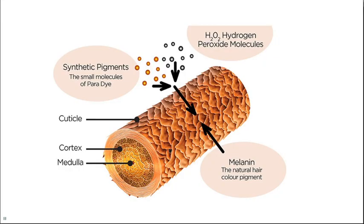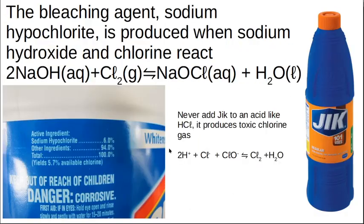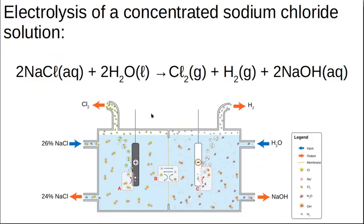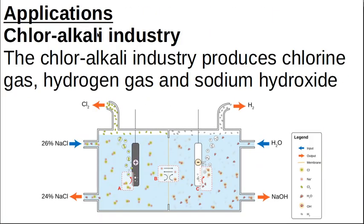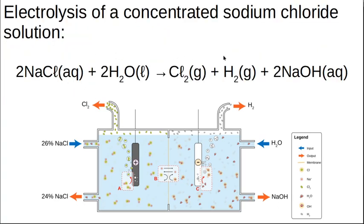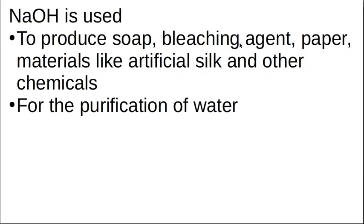So we use, to recap, if you're still with me. We use the chloralkali industry. The chloralkali industry makes chlorine, hydrogen and sodium hydroxide. And we use it for such things as making soap, bleaching stuff, purifying water.